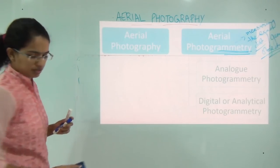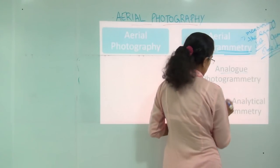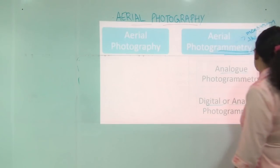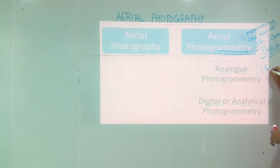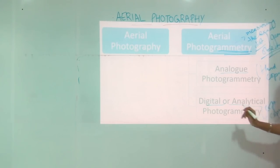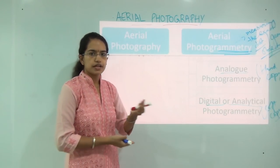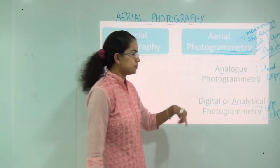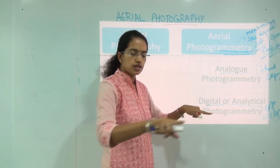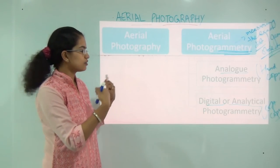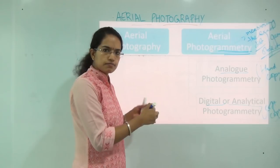There are two types of photogrammetry: analog and digital or analytical. Analog photogrammetry usually involves printing on paper, so it's a hard copy version. Digital or analytical photogrammetry is the soft copy or digital version. In one, you take a printout on a sheet of paper and use a conventional method of understanding or depicting the landscape. In digital photogrammetry, you work with the photographs on an online platform such as GIS software.